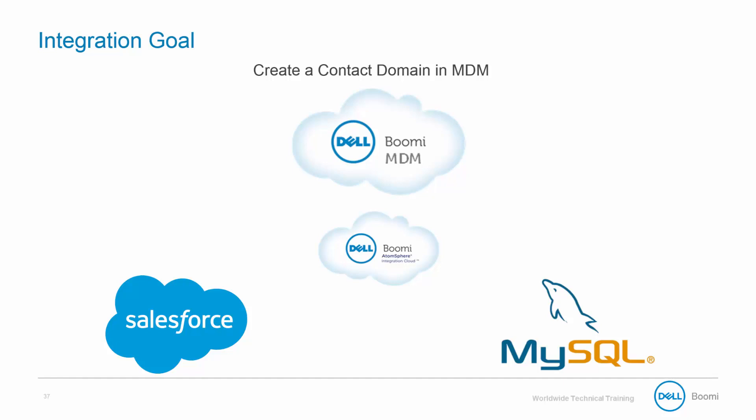We will be leveraging the AtomSphere platform to sync our data from Salesforce and the database into our MDM platform. If we take a look at the image on the screen, we can see a simple depiction of the high-level structure we'll be creating. At the bottom, we have our two sources that have similar but differing data. We're going to connect to each of these sources through AtomSphere processes. Once we've pulled in the desired data, we will transform it and move it into the MDM platform through a special MDM connector shape. Once in the MDM platform, we can master the data and create that single source of truth, which can then be pushed back into each of the sources as an update so all systems are using the same data.